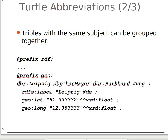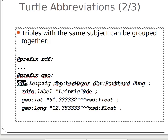Instead of repeating the subject every time, we can use a semicolon and then only put the new property and its value — semicolon, new property, its value, semicolon — and so on, until the end, marked with a dot to end data about the same subject.